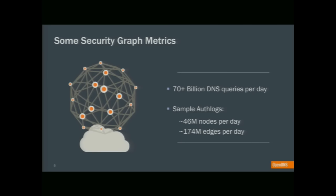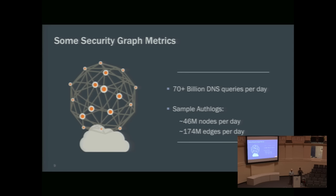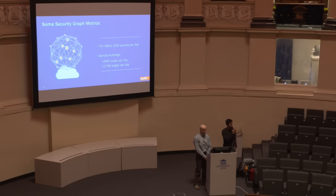Before we talk about the methods, it's useful to discuss the scale of data we're working with, as that puts the methods in perspective. We see about 70 billion DNS queries per day, which translates into about half a terabyte of data per hour that needs to be processed. If you took a sample of our authoritative data and transformed it into a relational graph, you'd have around 46 million nodes and 174 million edges, where nodes represent domain-IP pairings and edges represent relationships between nodes. This is really a needle-in-a-haystack problem.